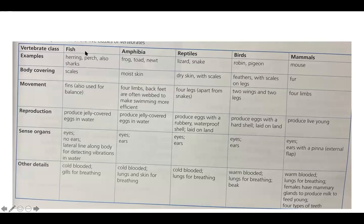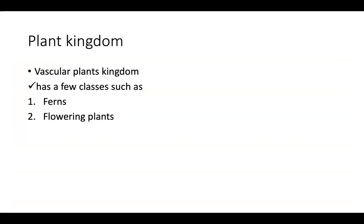I have made a table for the differences between the five vertebrate classes. Examples: fish (shark), amphibia (frog), reptile (lizard), bird (pigeon), mammal (mouse). In terms of body temperature: fish, amphibia, and reptile are cold-blooded; birds and mammals are warm-blooded. You can pause the video to copy these notes.